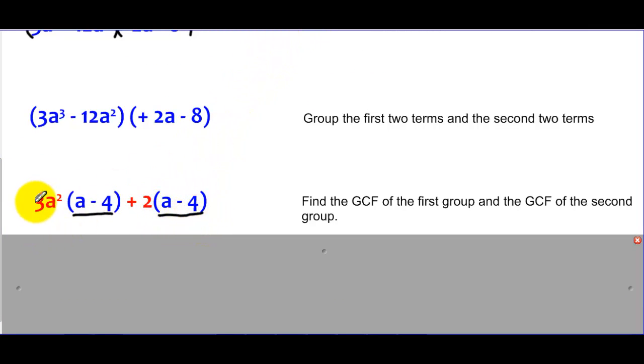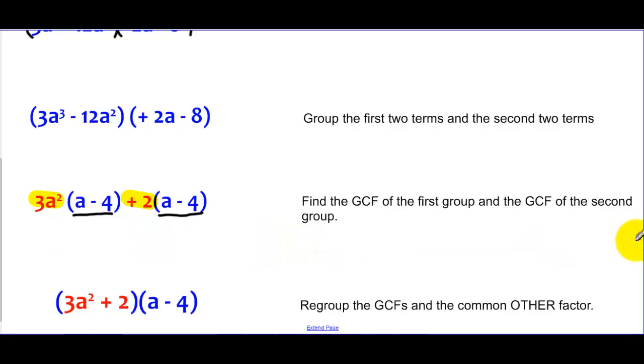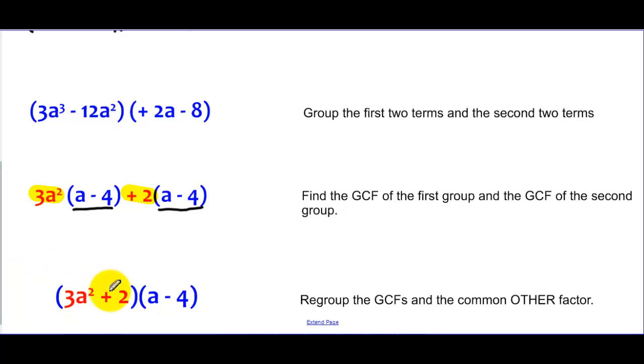The other one is going to come from the GCFs. So I'd say 3A² and two. That's going to make my other one. So here's my regrouped version. So I factored, and then I'm going to regroup 3A² plus two. That makes a factor made up of the two GCFs, and A minus four is the other one.